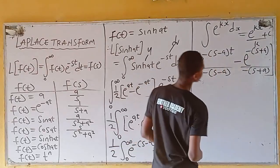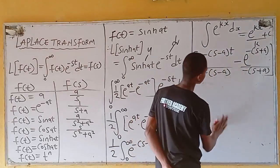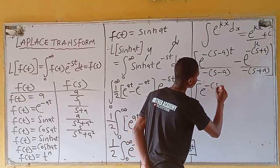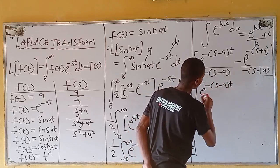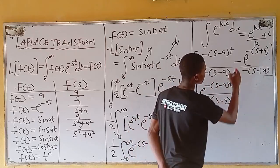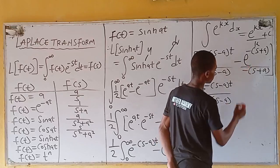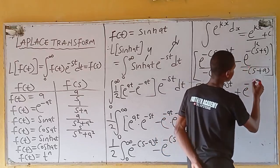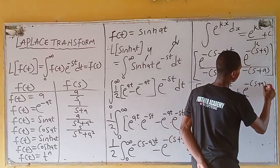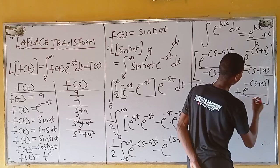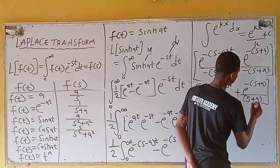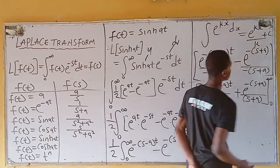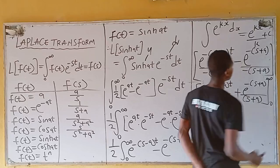Let's write this in a nicer way. I have: [e^(-(s-a)t)] / [-(s-a)] plus [e^(-(s+a)t)] / [(s+a)], evaluated from 0 to infinity, all multiplied by one-half outside. Now substituting the upper limit (infinity) followed by the lower limit (zero) — anywhere you see t, you substitute infinity first and then zero.